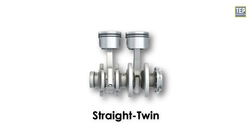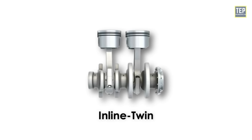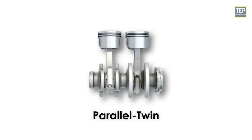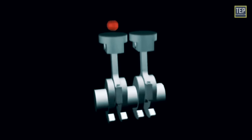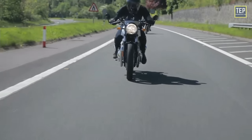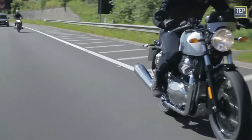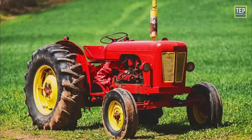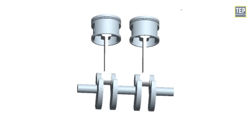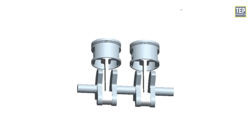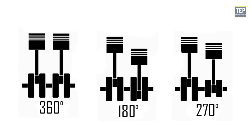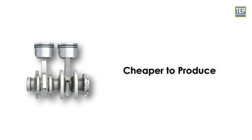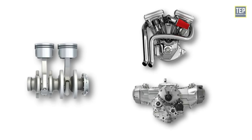A straight twin engine, also known as an inline twin, vertical twin, or parallel twin engine, is a two-cylinder piston engine with cylinders arranged in a line along a common crankshaft. Straight twin engines are primarily used in motorcycles, but other uses include automobiles, snowmobiles, jet skis, all-terrain vehicles, and tractors. Various crankshaft configurations have been used, the most common being 360, 180, and 270 degrees. Straight twins are more compact, simpler in design, and cheaper to produce compared with V-twin and flat twin engines.